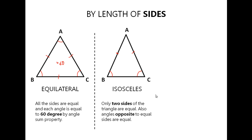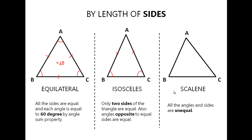The last triangle in this category is the scalene triangle. In a scalene triangle, all the sides and all the angles are not equal to each other. Since the sides of the triangle are not equal, the angles opposite to the sides are also unequal.